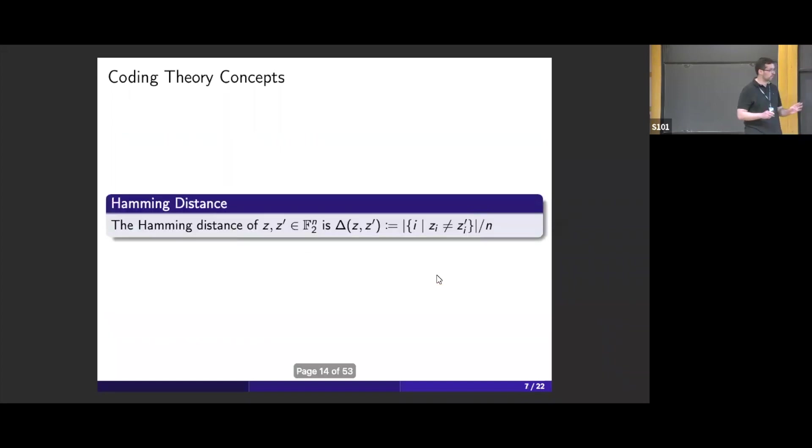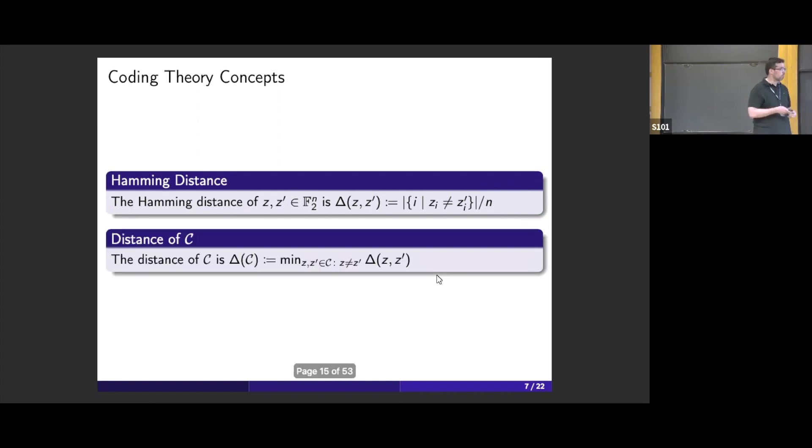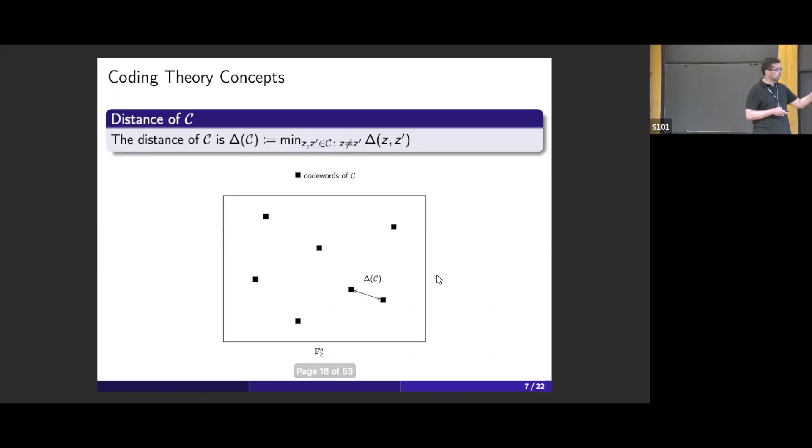We need to introduce this notion of Hamming distance, which is a discrete notion of distance. You take two words in this space, and then you're counting the fraction of positions where these two words differ. Now having this discrete notion of distance, we can talk about the distance of the code. You look at pairs of distinct code words and take the minimum of them. That's the distance of the code, the second very important parameter.